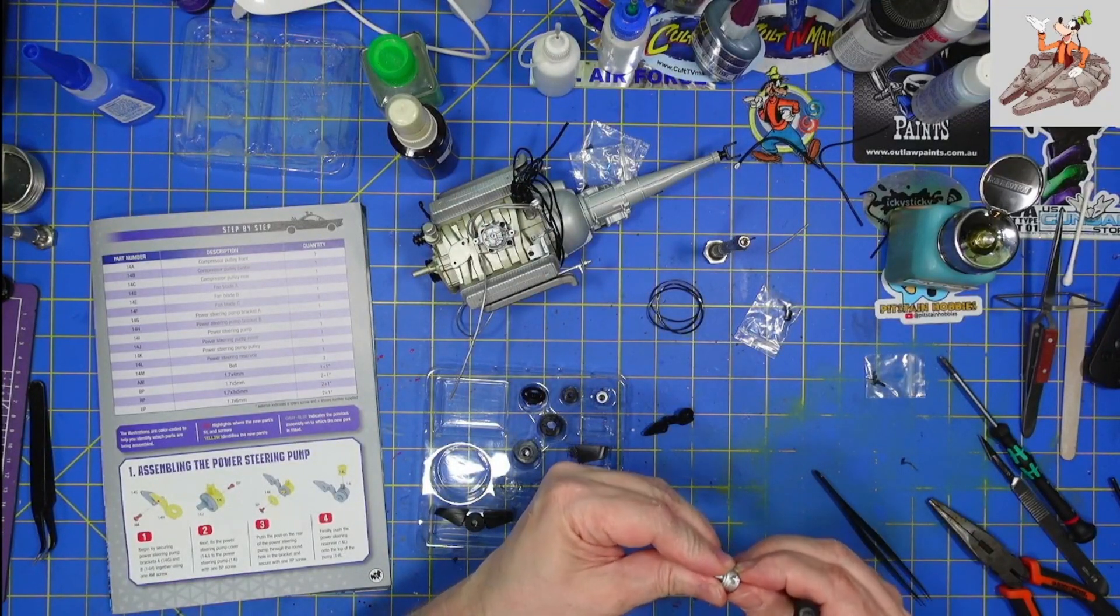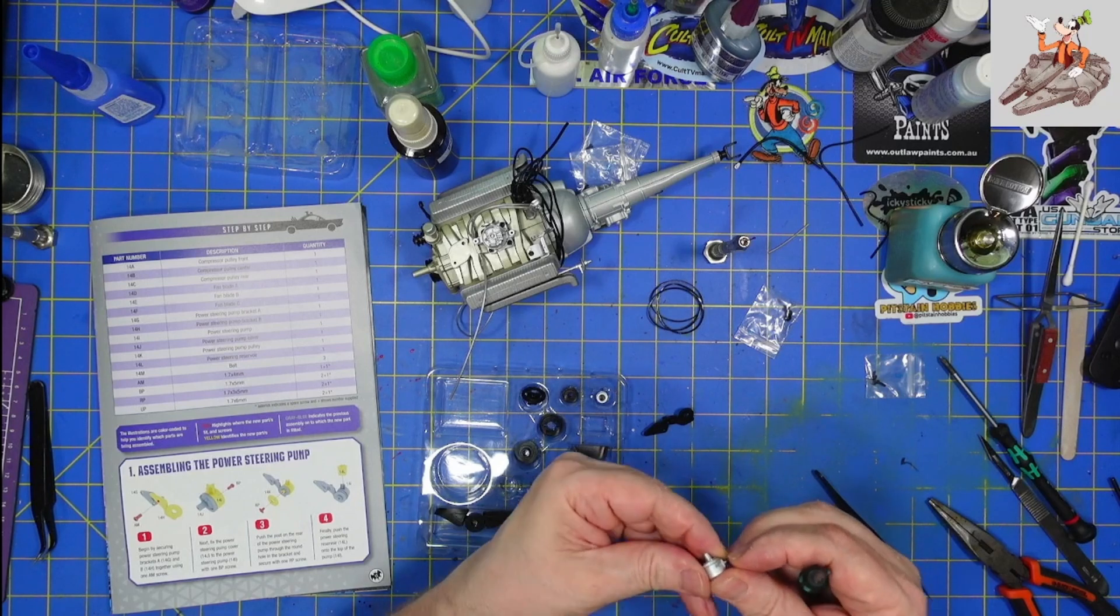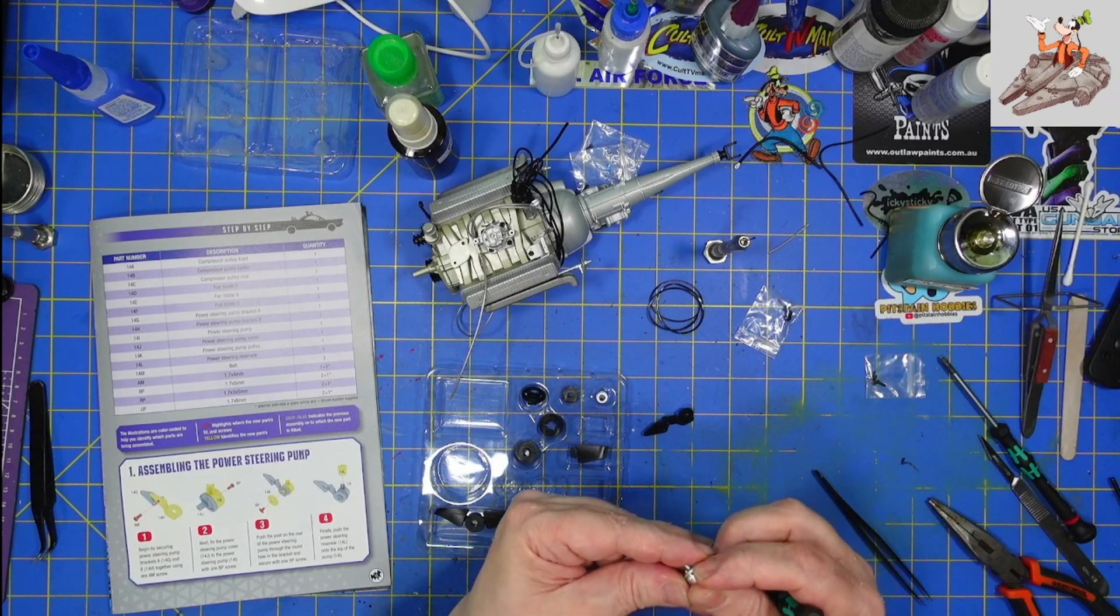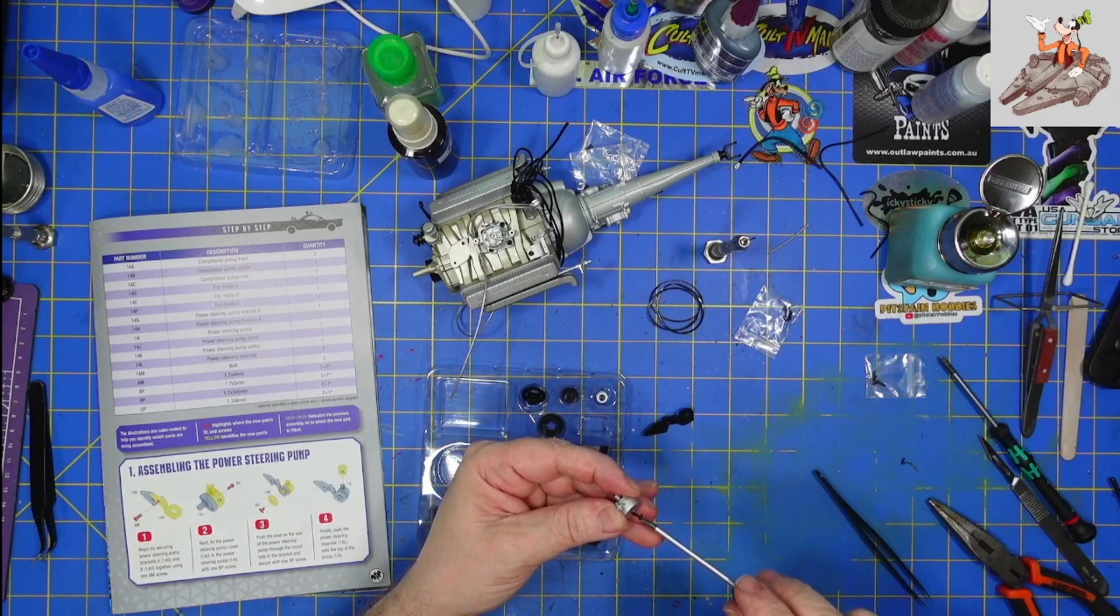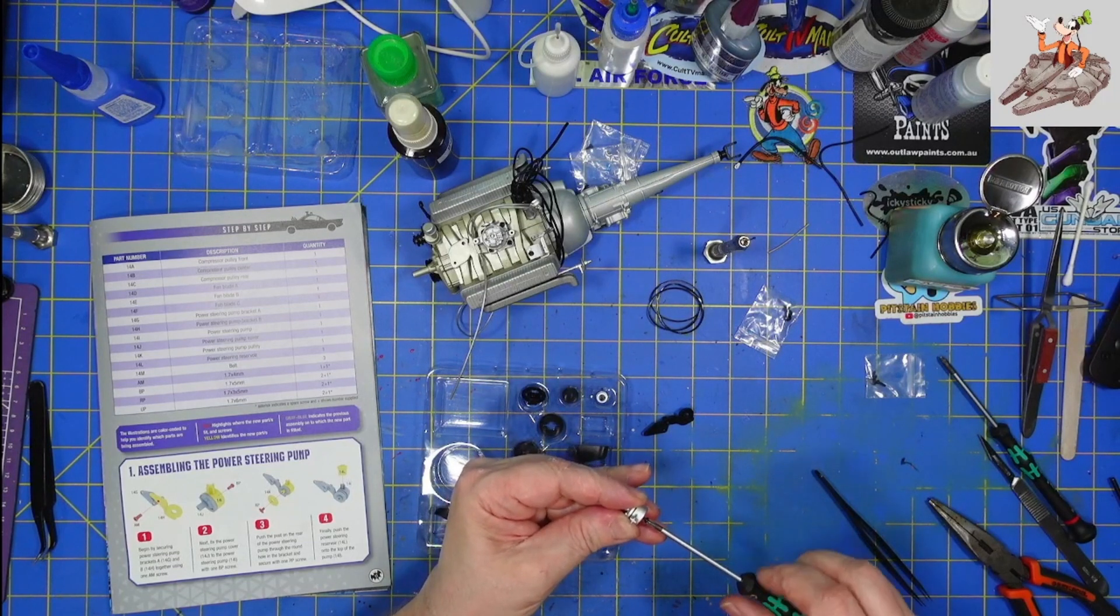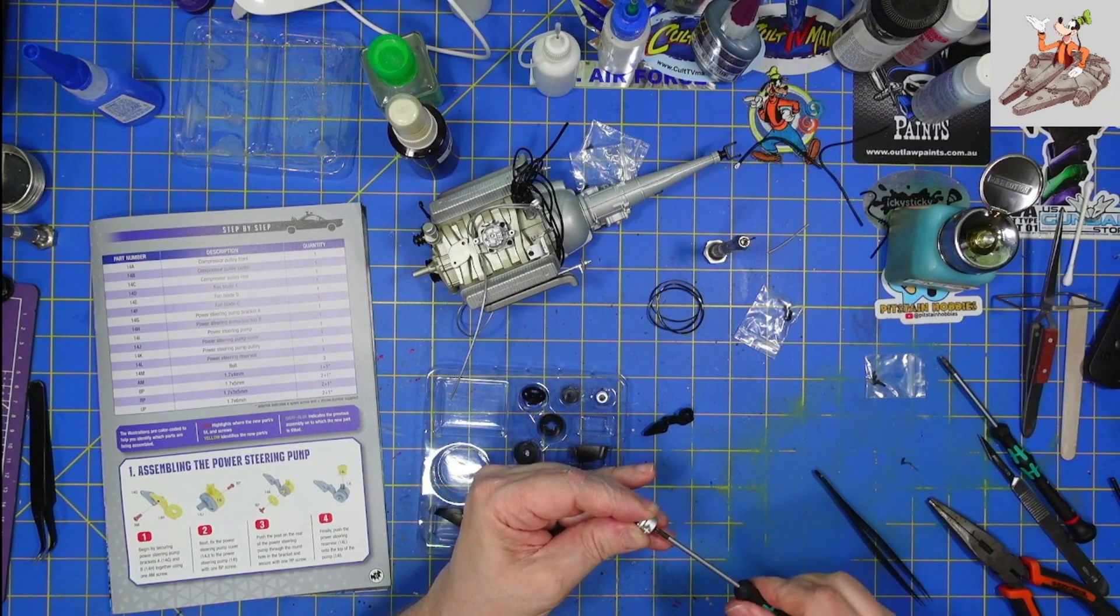Drop that in back there. Make sure the keyway is lined up. And mainly the keyway is to keep your details on the outside looking right. Come on, get in that hole. Put it in. Put the screw in. Tighten it all the way down.